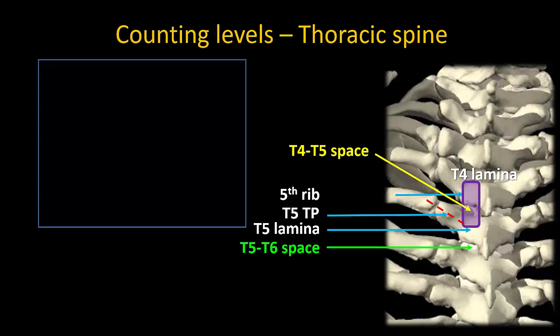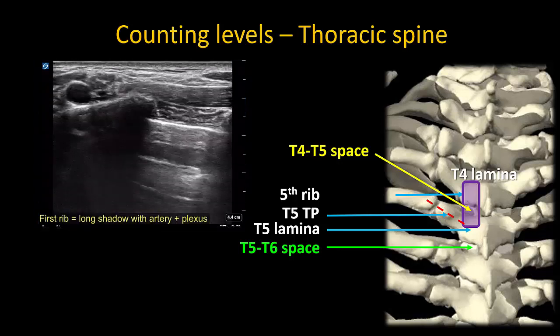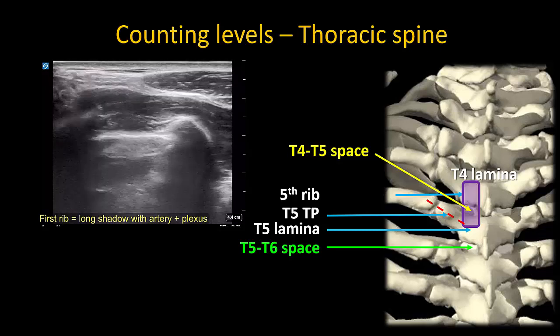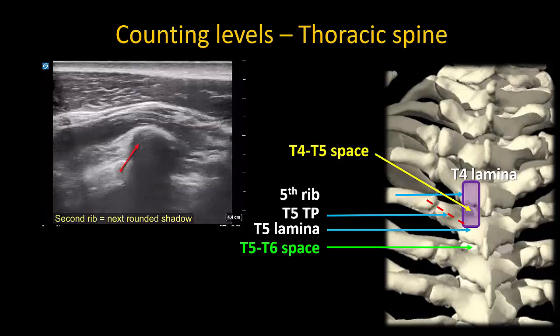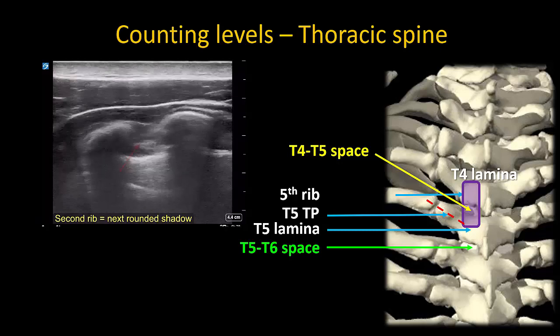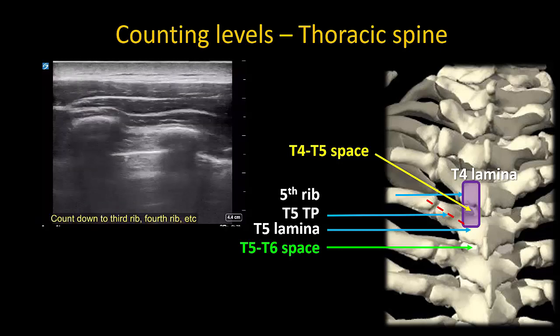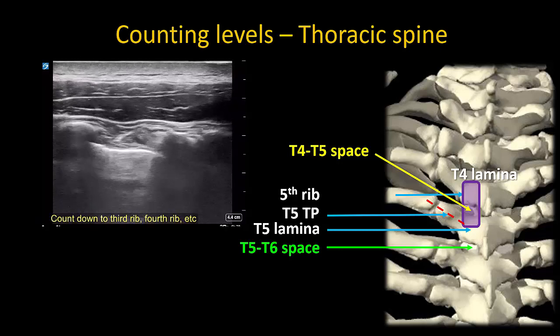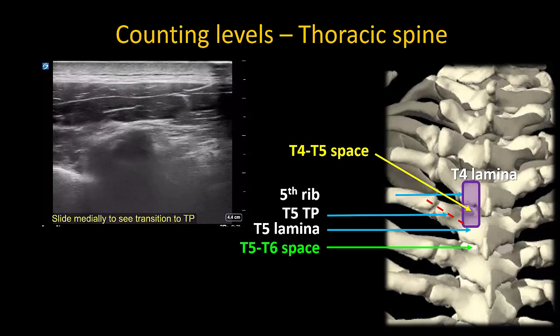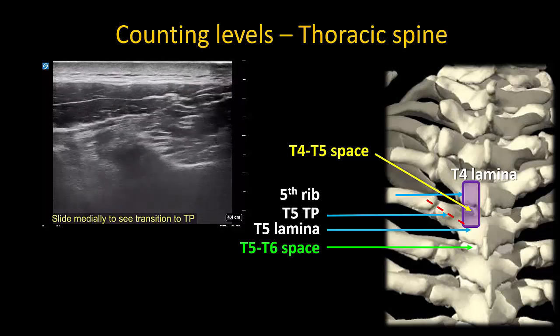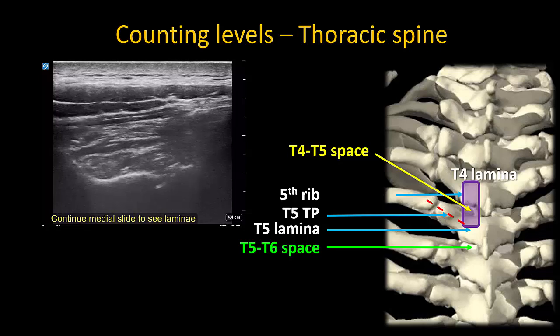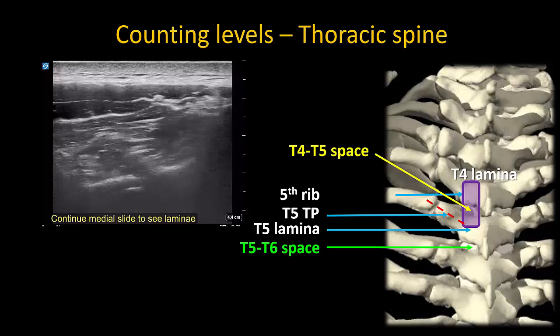This video illustrates this. The first rib is easily recognizable, as before, as a long shadow with artery and plexus resting on top. The second rib is the next shadow and each rib can be counted in turn. Sliding medially from the third rib in this case, we see the T3 transverse process transition to the T2 lamina and the T2 to T3 interlamina space is visible.